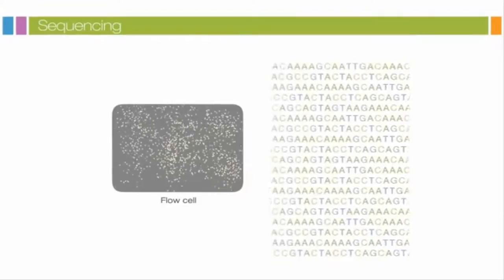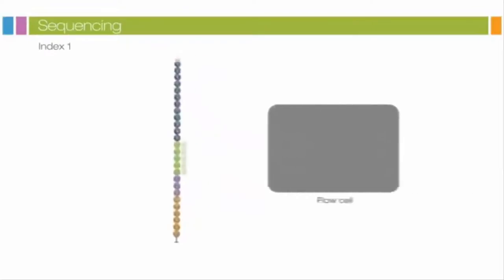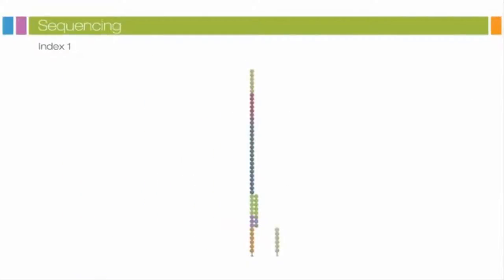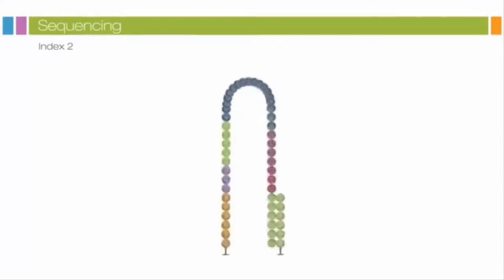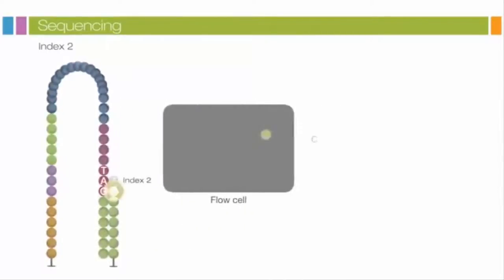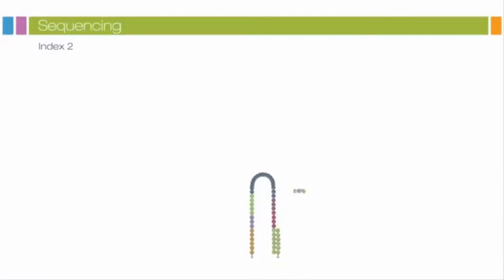After the completion of the first read, the read product is washed away. In this step, the Index 1 read primer is introduced and hybridized to the template. The read is generated similar to the first read. After completion of the index read, the read product is washed off and the three prime end of the template is deprotected. The template now folds over and binds the second oligo on the flow cell. Index 2 is read in the same manner as Index 1. Index 2 read product is washed off at the completion of this step.